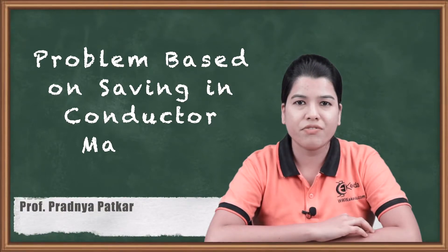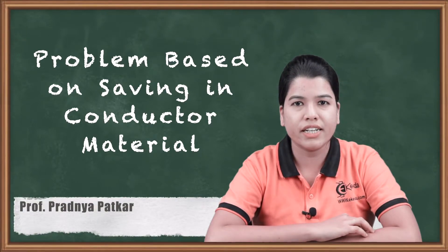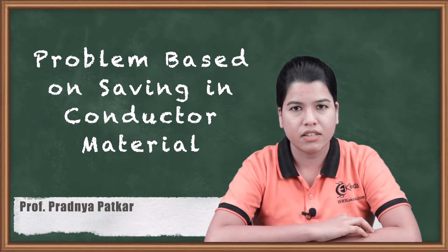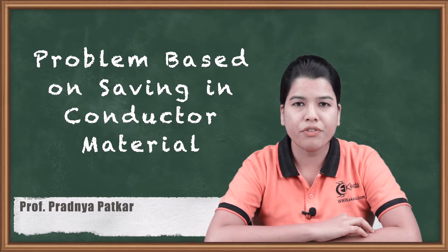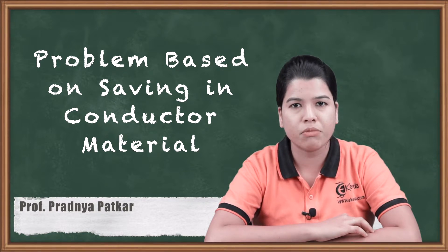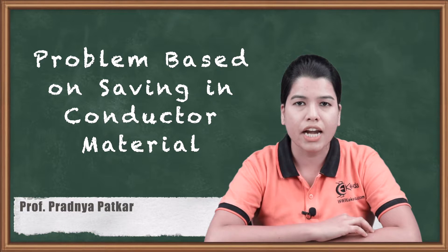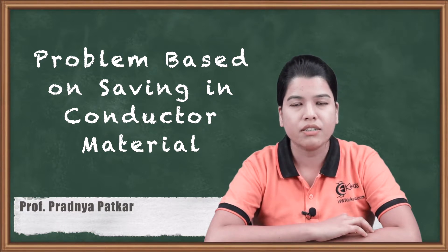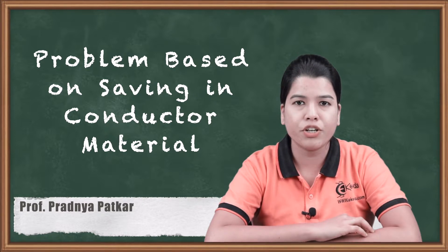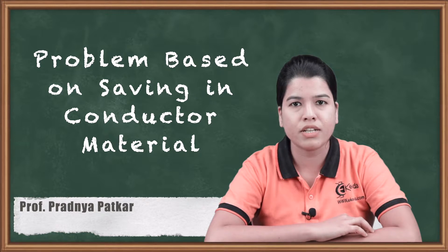Hello friends. In the previous video we studied the saving in conductor material. We studied that if we consider a two winding transformer and use the same transformer as an auto transformer, there is a saving in the conductor material. In this video we are going to study how to solve problems based on the saving in conductor material.